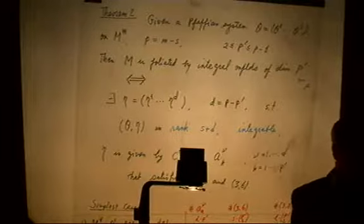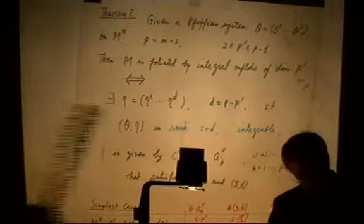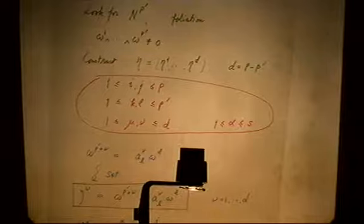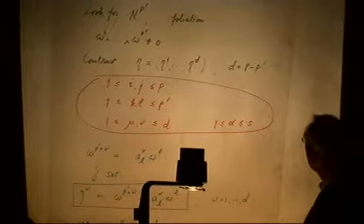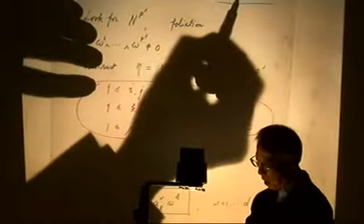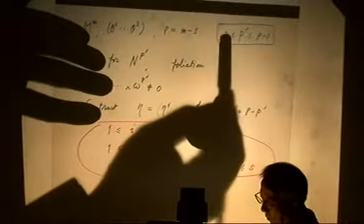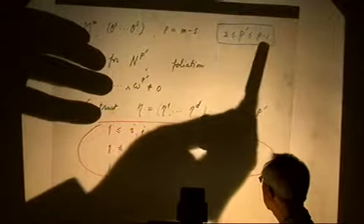How can I find this additional one-form? In other words, I want to find the smallest integrable supersystem. This idea is already in Cartan's prolongation theory. Note that P-prime equals one is not interesting because it always exists — that is just an ODE problem. So P-prime ranges between two and P minus one.